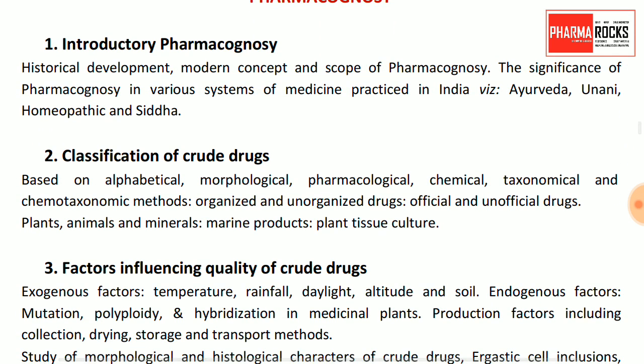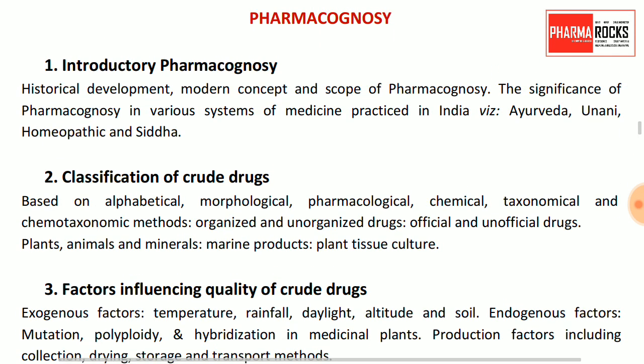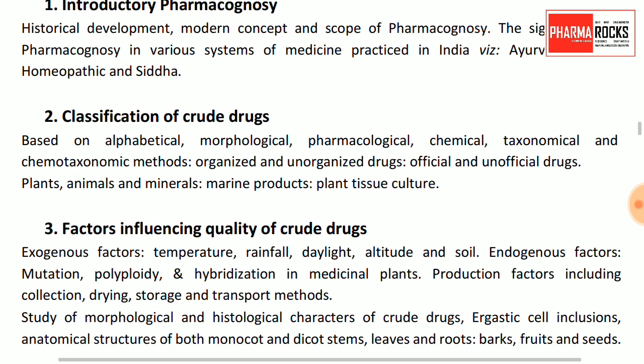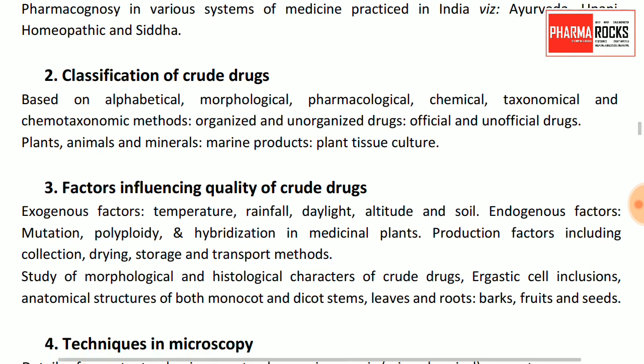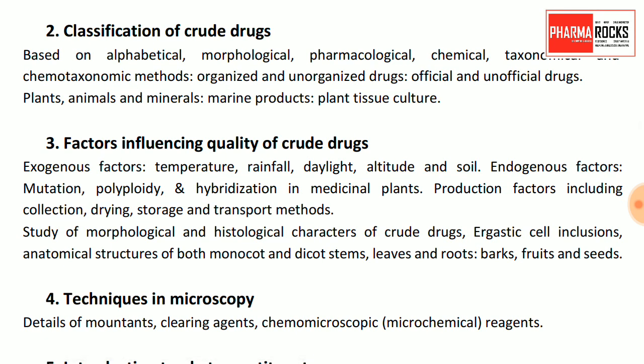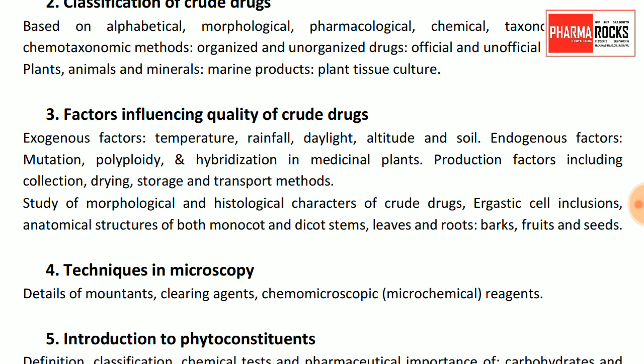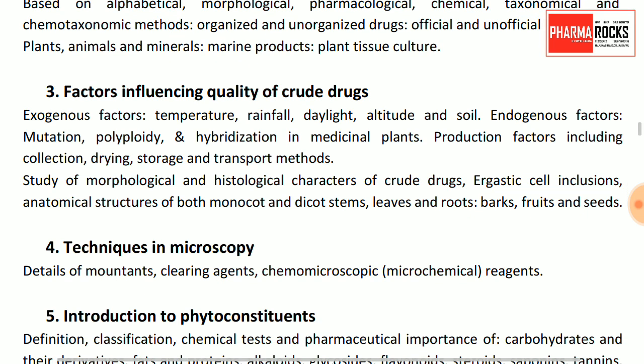The next subject is pharmacognosy. The best way to study it is using the CK Kokate book. Cover introduction to pharmacognosy, classification of crude drugs, and factors affecting quality of crude drugs — mutation, polyploidy, and hybridization.